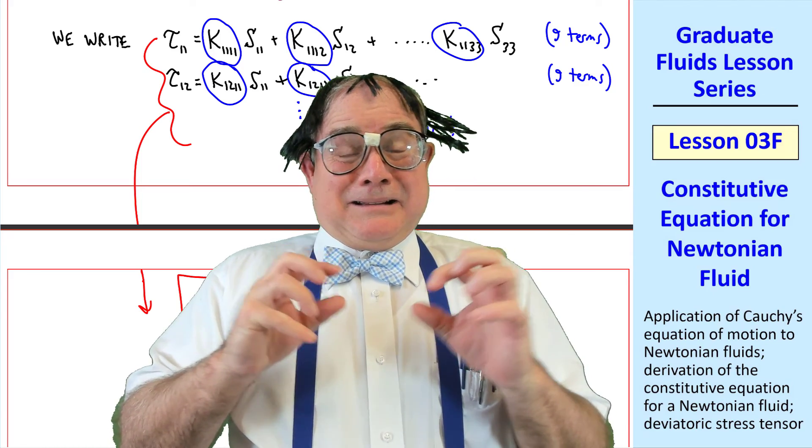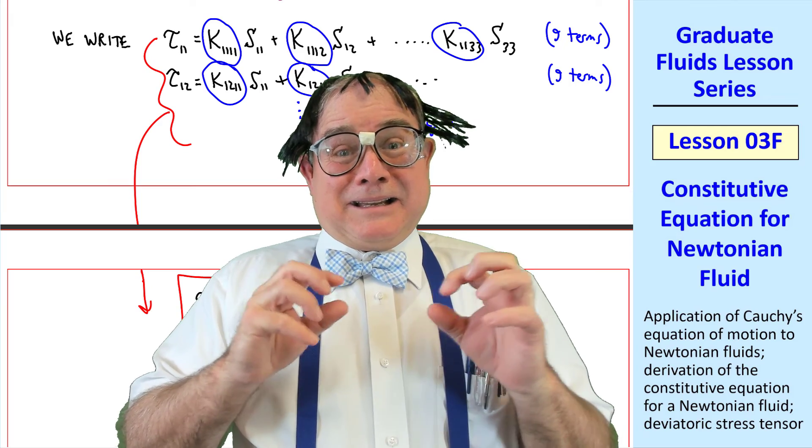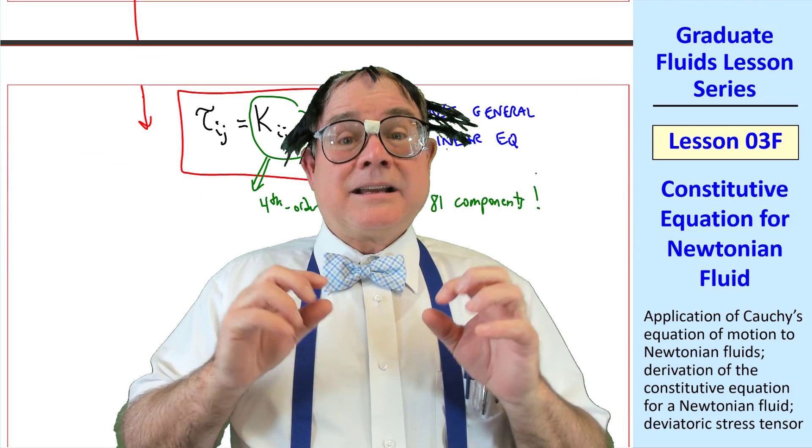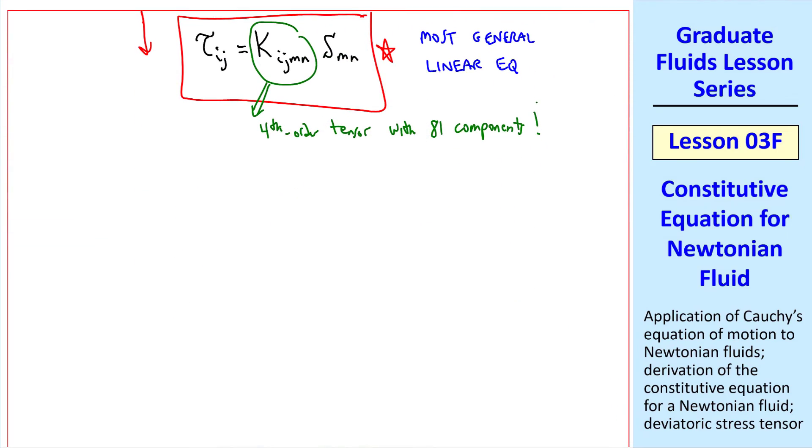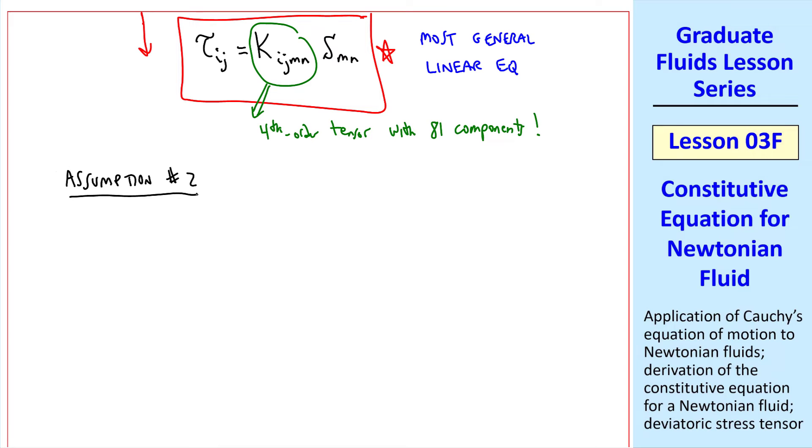I think I'm going to be sick. Calm down, Ned. It won't be as hard as you think. How do we find all 81 of these coefficients? Well, that's where assumption number two comes in, which is that the fluid is isotropic.